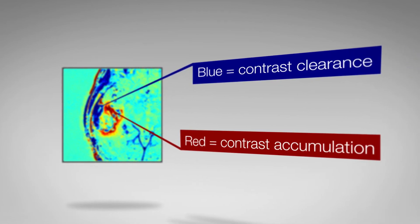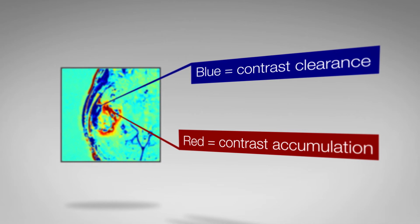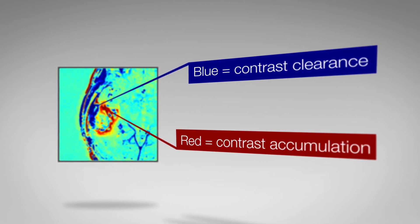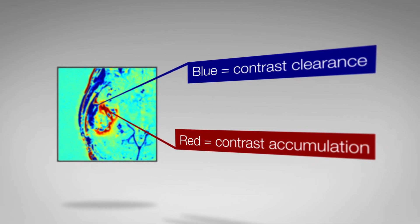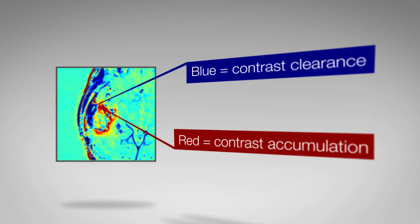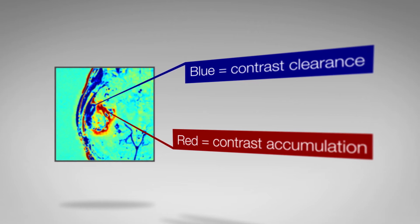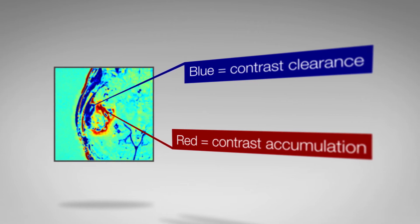Areas of efficient contrast agent clearance, indicating viable vessels, appear negative in blue on the image, while less efficient clearance appears positive in red.